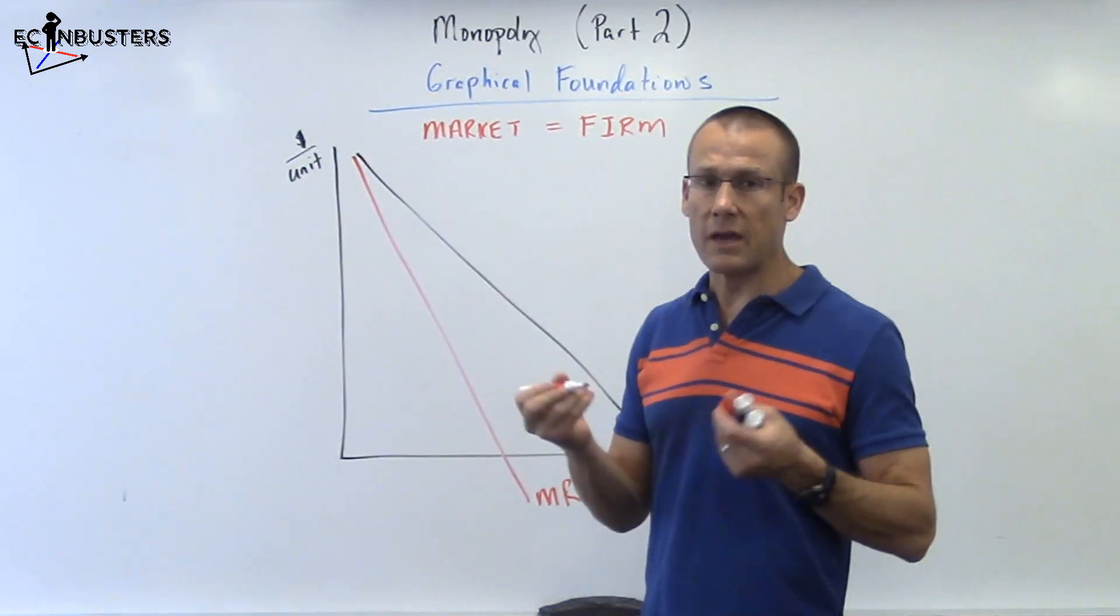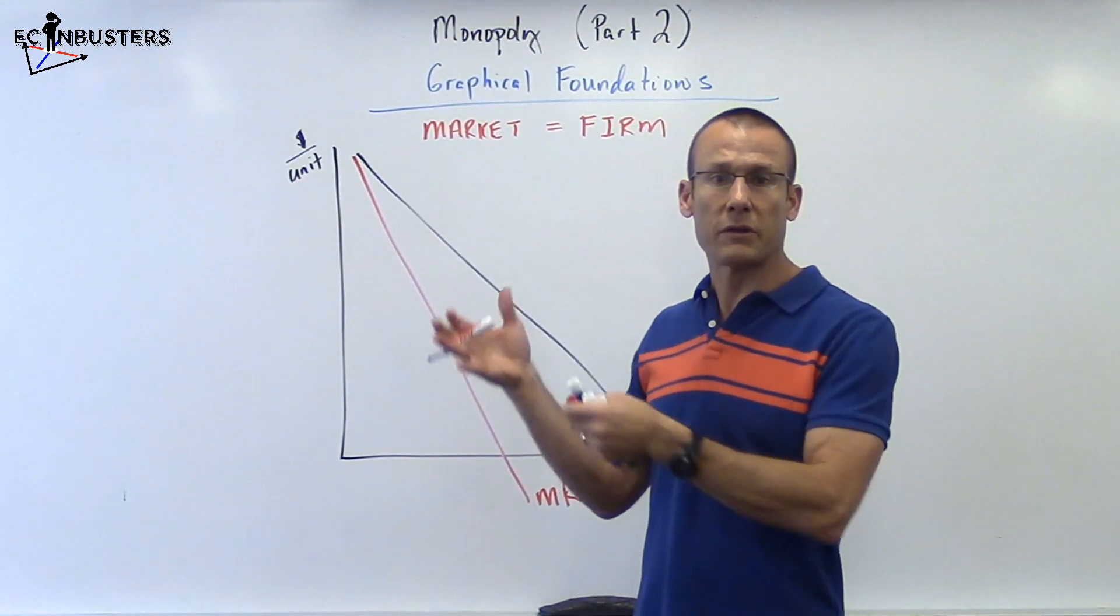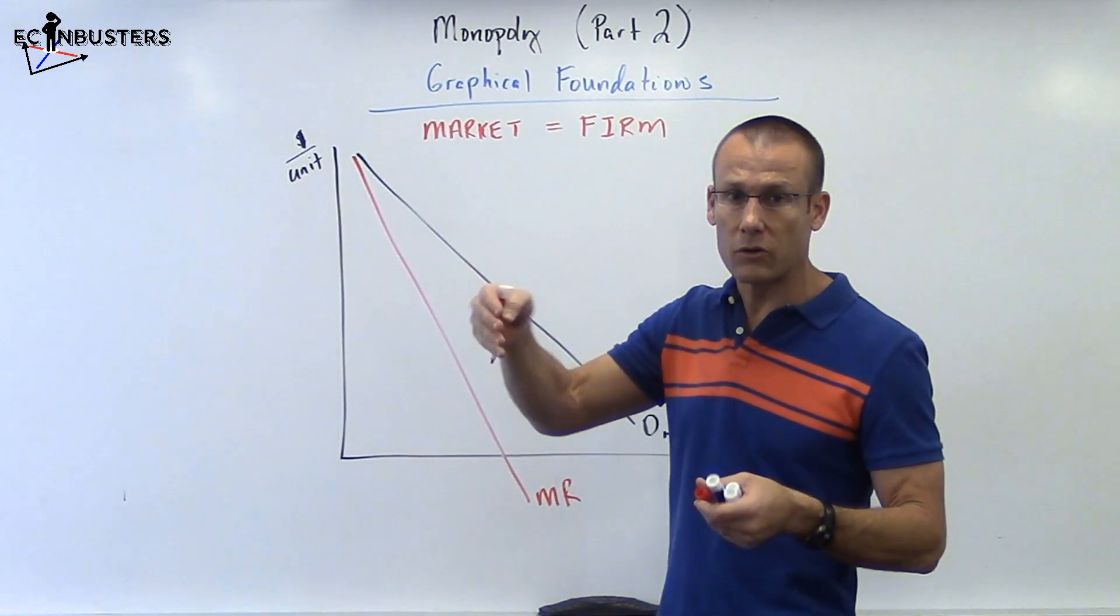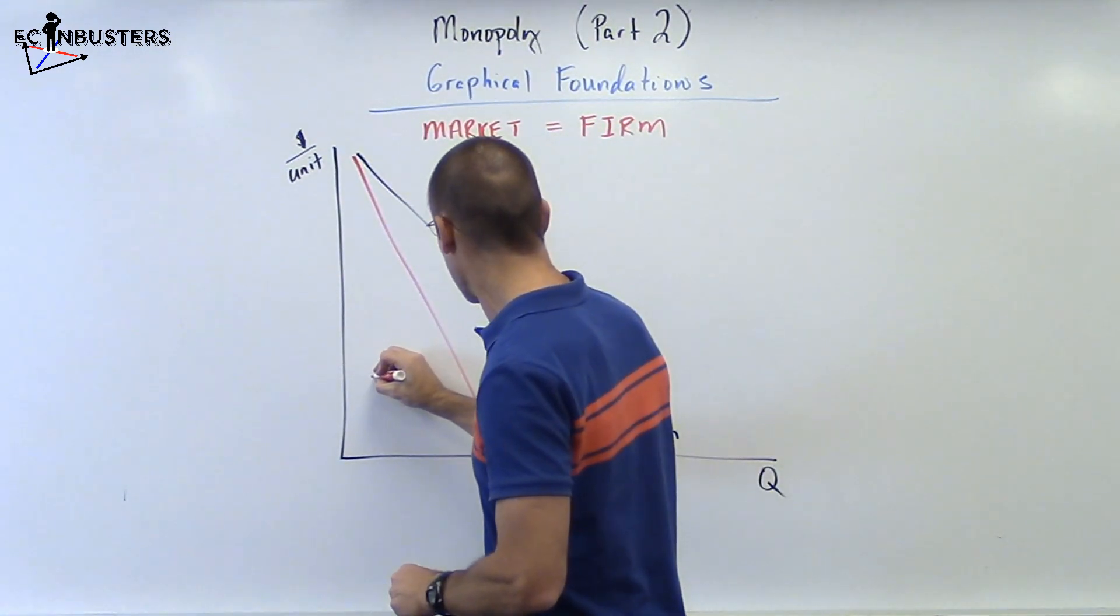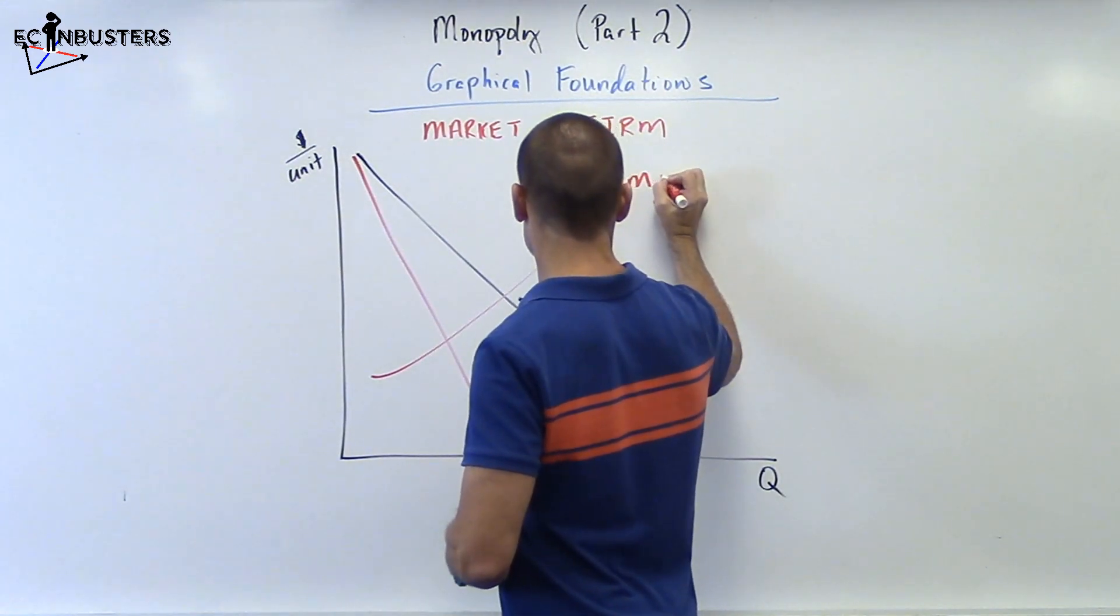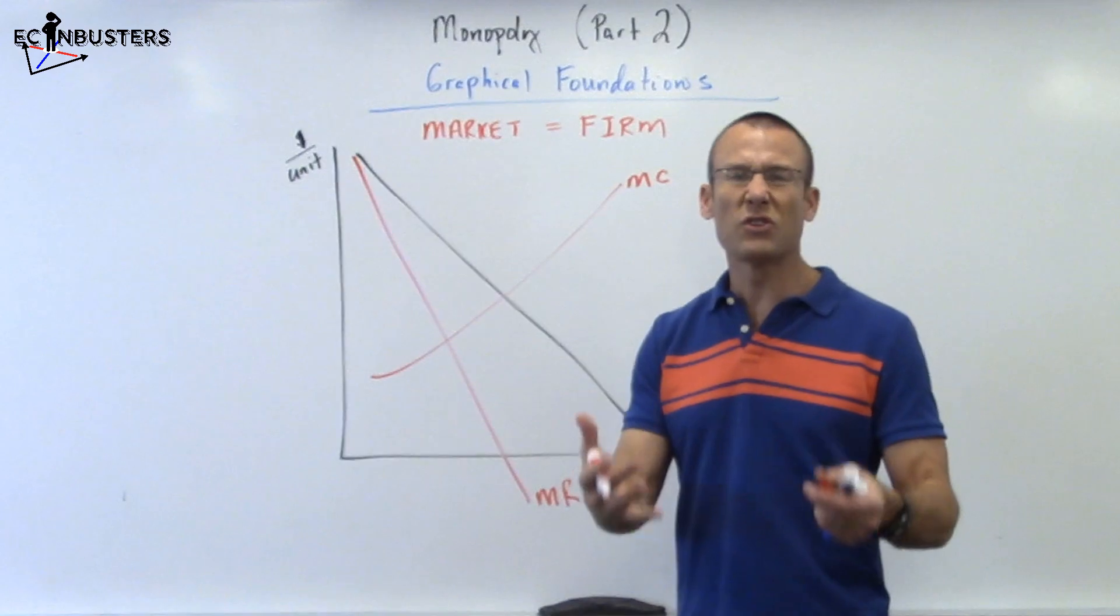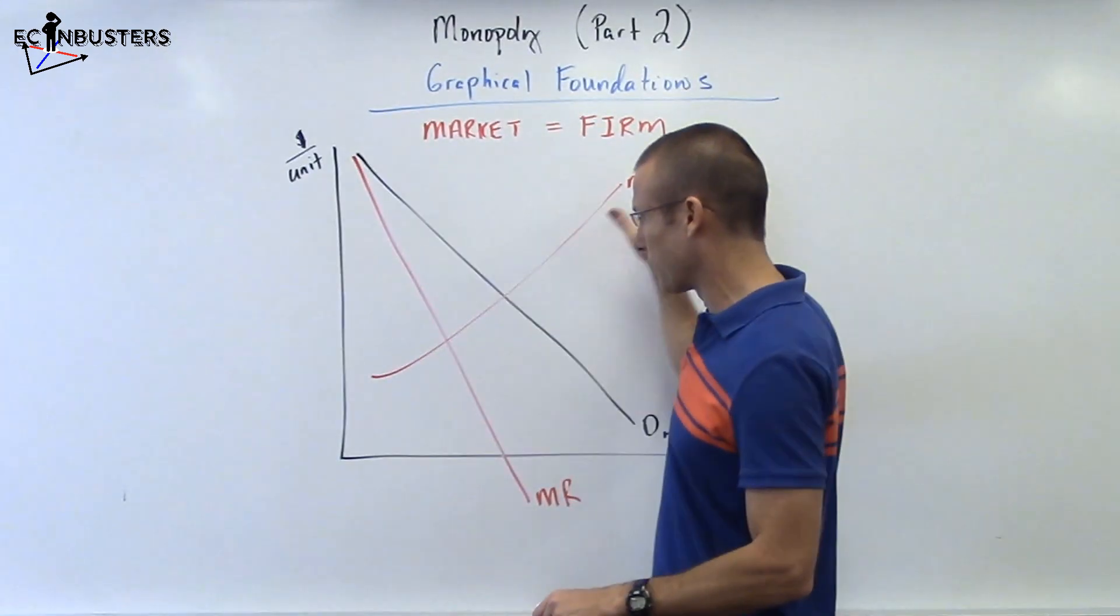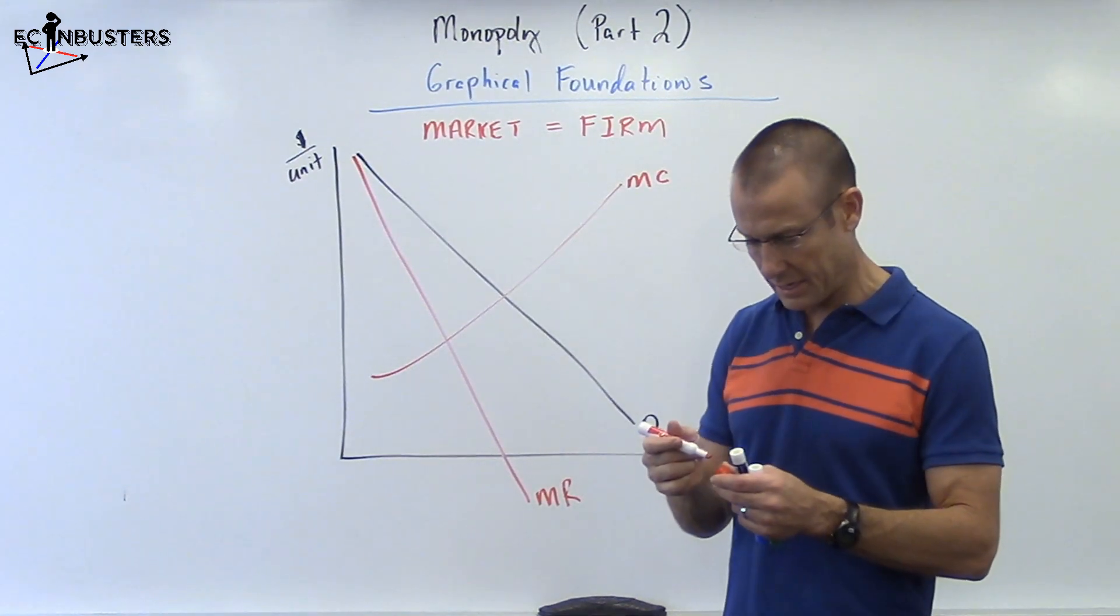Now I'm going to put our MC. MC, we know from the cost of production videos, is upward sloping eventually. It might go down for a while because of increasing returns to scale, but eventually the MC is going to come up. So I put my MC curve in. Now I put a little bit of hook in there. You can draw a linear. Just make sure it's upward sloping when it intersects the MR and the demand. That's the key.